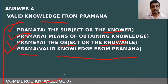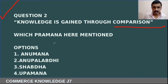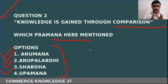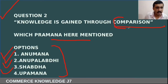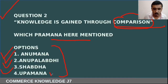We move to the second question: knowledge is gained through comparison — which kind of pramana is mentioned here? The options are anumana, anupalabdi, shabda, and upamana. Upamana is the right answer — that is option number four.